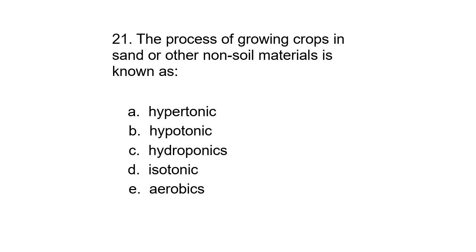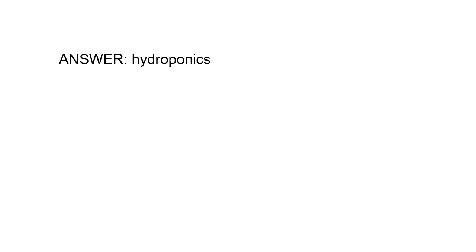Number 21: The process of growing crops in sand or other non-soil materials is known as: a) hypertonic, b) hypotonic, c) hydroponics, d) isotonic, or e) aerobics. The answer is hydroponics.